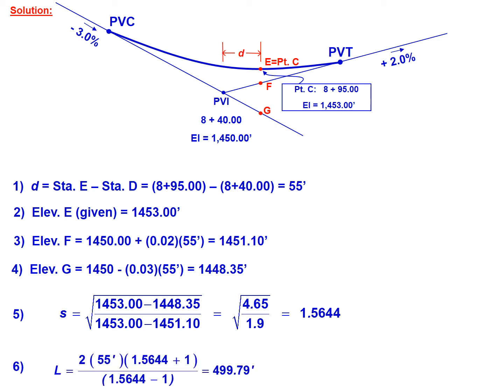We're going to plug that into our equation for L. So L equals 2 times 55 feet times 1.5644 plus 1 divided by 1.5644 minus 1, which gives us a length for the curve of 499.79 feet.